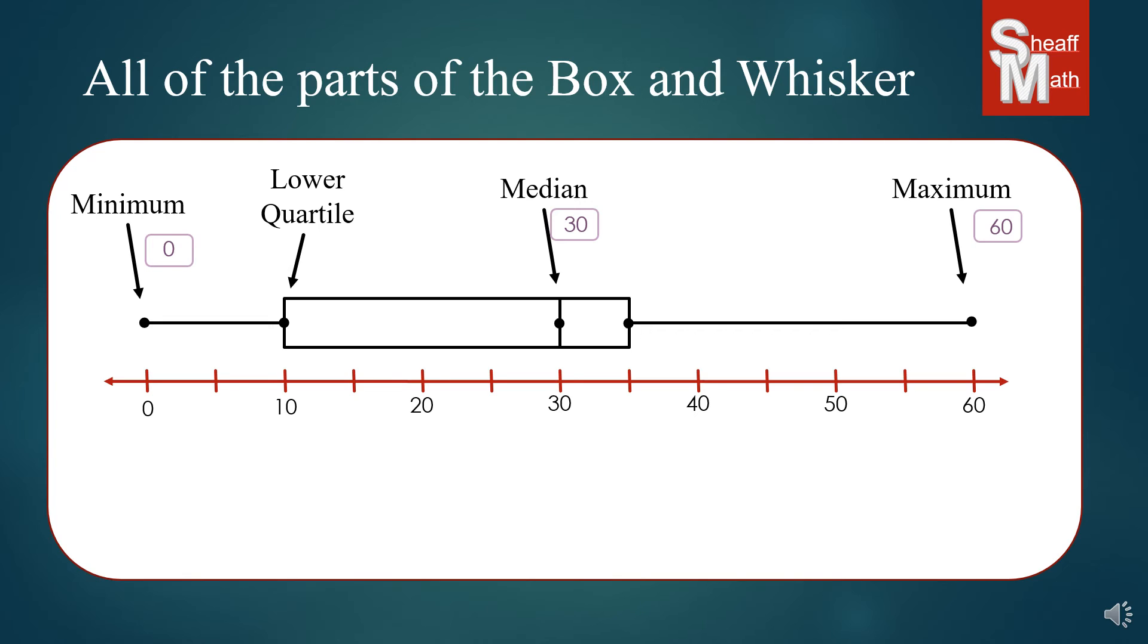This dot right here is called the lower quartile. The lower quartile is at the edge of the boxes. For our example here it's 10. That would be a 10 year old person who is in the middle if you take the lower half of the data.